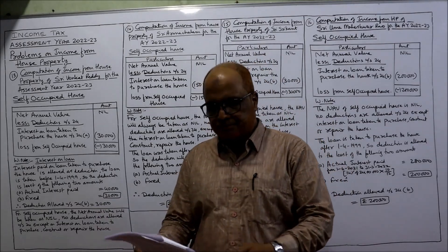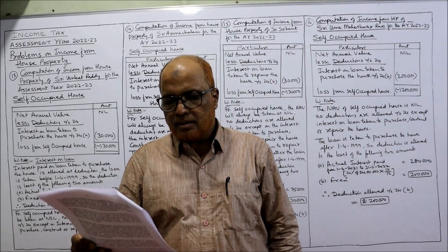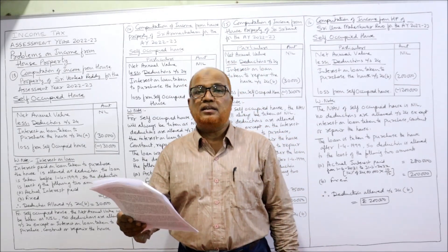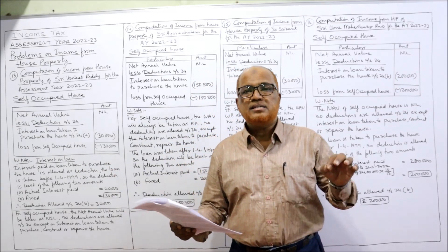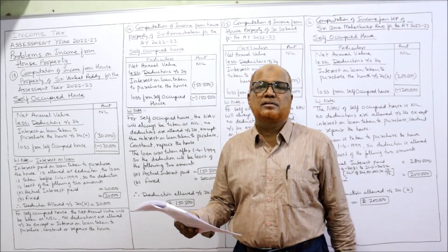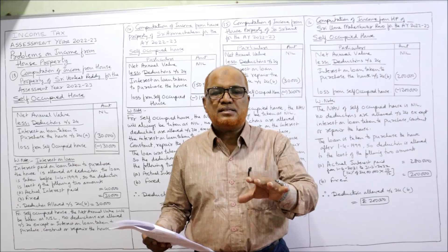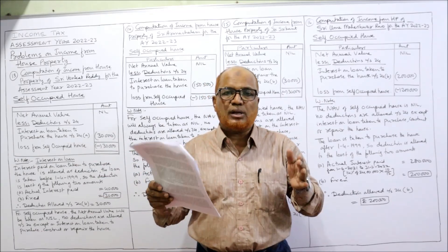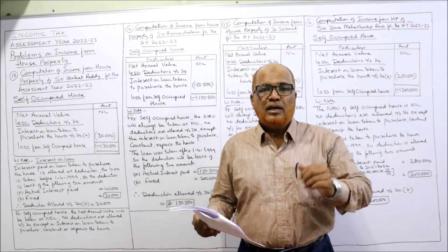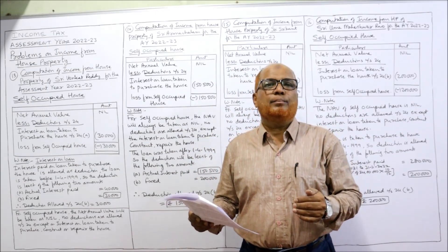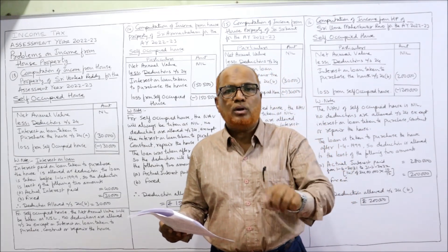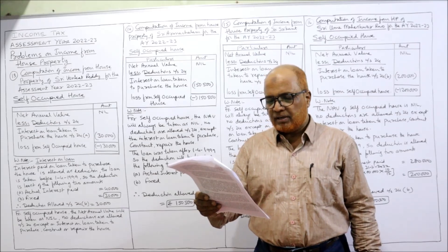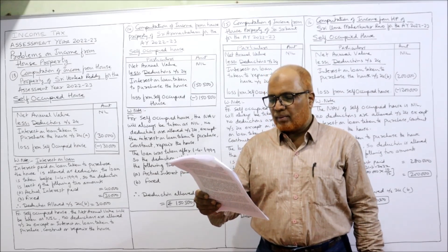Now see problem number 13. Sri Venkat Reddy purchased a house in Kakinada in the year 1997 and is using it for his residential purpose. This is the first problem where the assessee is using the property for his own residential purpose — he has not let it out, he is not earning any income by letting out. He is using the house for his own self-occupation during the previous year relevant to the current assessment year.